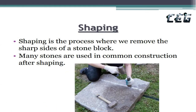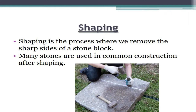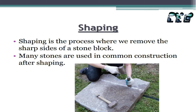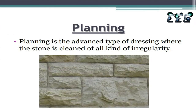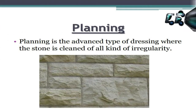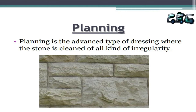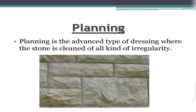Shaping is the process where we remove the sharp sides of a stone block. Many stones are used in common construction after shaping. Planning is the advanced type of dressing where the stone is cleaned of all kinds of irregularity.